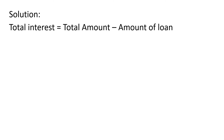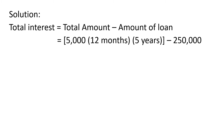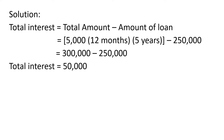For the solution, total interest equals total amount less amount of loan. By substitution, the total amount is 5,000 times 12 months times 5 years, less the amount of loan which is 250,000. By following PEMDAS, we multiply first: 5,000 times 12 times 5, which equals 300,000. Then subtract 250,000. That gives 50,000. Therefore, the total interest is P50,000 pesos.